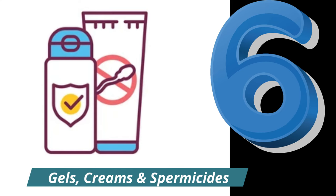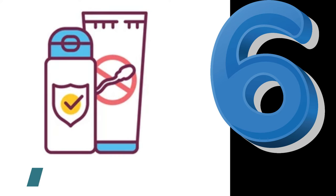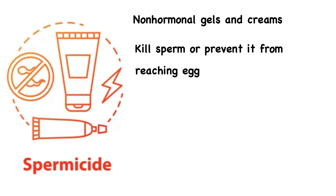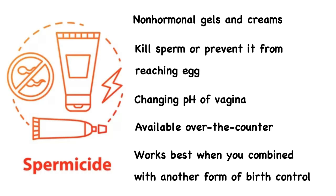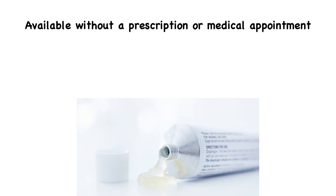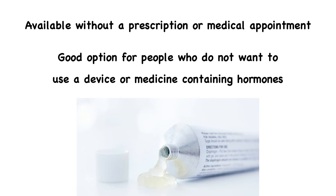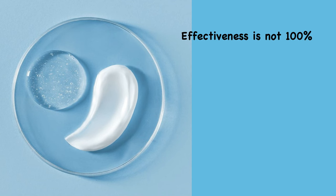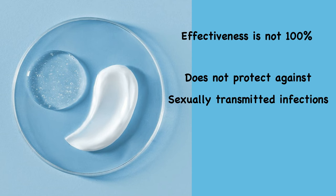The sixth method is gels, creams, and spermicides. Several types of non-hormonal gels and creams use active ingredients to kill sperm or prevent it from reaching an egg — for example, by changing the pH of the vagina. These are available over the counter and work best when combined with another form of birth control. The advantages are that they are available without a prescription and are a good option for people who do not want to use hormonal devices or medicines. The disadvantages are that their effectiveness is not 100% and they do not protect against sexually transmitted infections.